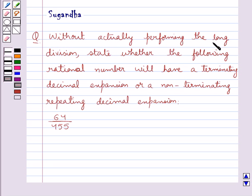Without actually performing the long division, state whether the following rational number will have a terminating decimal expansion or a non-terminating repeating decimal expansion. The given rational number is 64 upon 455.